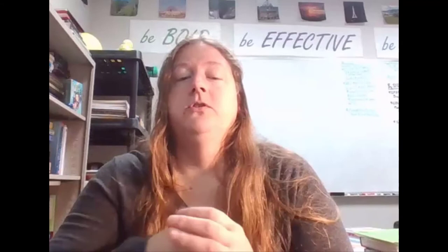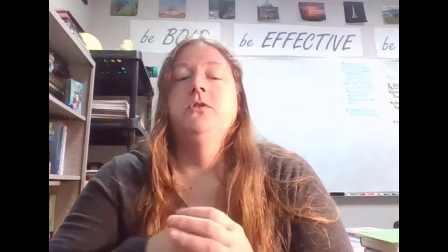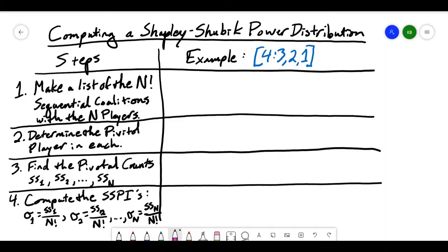After we've got our pivotal counts, we find a Shapley-Shubik power index, which is the ratio of each player's pivotal count to the total number of sequential coalitions, or n factorial. When we put all of those Shapley-Shubik power indexes together, we have what's called the Shapley-Shubik power distribution. So let's take a look at an example of determining a Shapley-Shubik power distribution step by step.